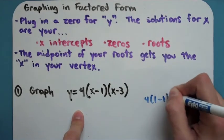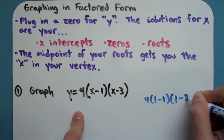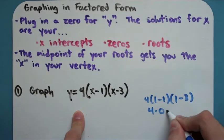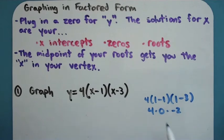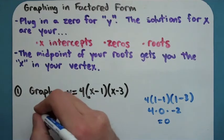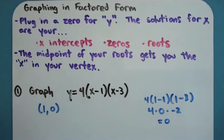4 times 1 minus 1, times 1 minus 3, so I get 4 times 0 times negative 2, although it doesn't really matter. I end up with a 0. So if I plug in a 1 for x, I get out a 0 for y. That means that the point 1, 0 is on this graph.